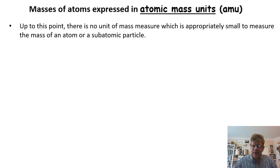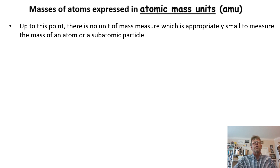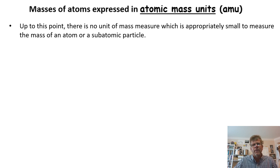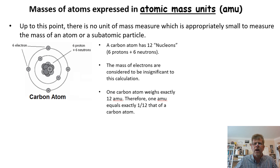Let's shift gears and revisit what the appropriate unit of mass measure is for atoms or subatomic particles. Previously, we gave subatomic particles their mass in kilograms — on the order of 10⁻²⁷ kg, something infinitesimally small. No unit of mass measure has so far been appropriately small enough to measure the mass of an atom or subatomic particle, so we had to come up with another yardstick, and that yardstick is based on the carbon atom.